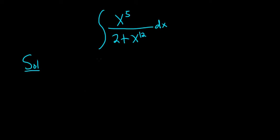So I'm thinking we can rewrite this as follows. We can write this as x to the fifth over 2 plus, and then we can write x to the 12th as x to the 6th quantity squared, like that.